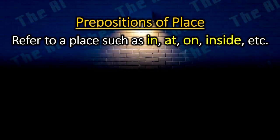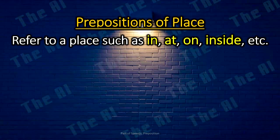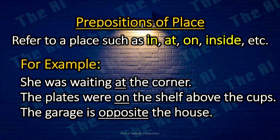Prepositions of place. The prepositions of place refer to a place, such as in, at, on, and inside. For example: She was waiting at the corner. The plates were on the shelf above the cups. The garage is opposite the house.